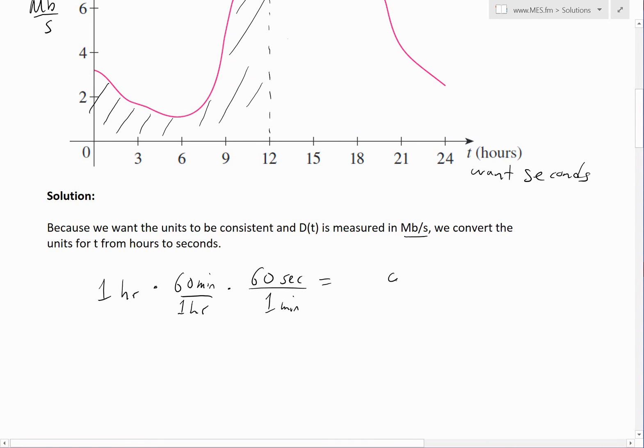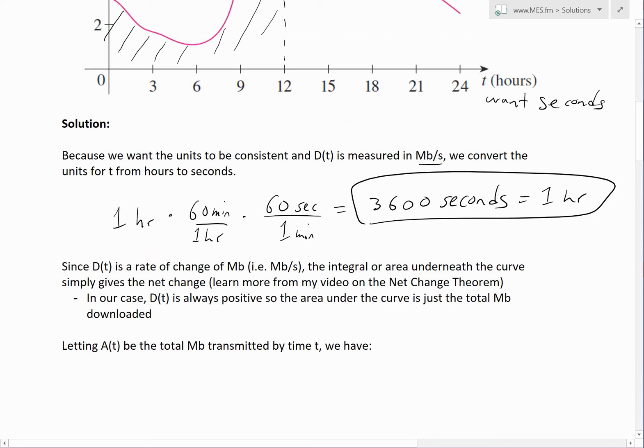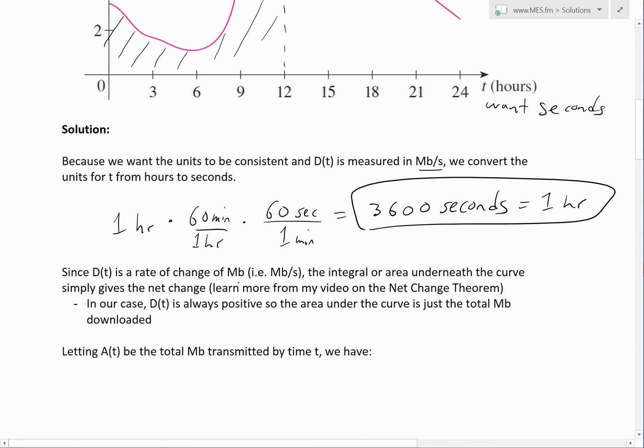So when you multiply all these out, the hours cancel, the minutes cancel, we're just left with here, add two zeros, six times six is 36. So one hour equals 3600 seconds. We could use this conversion when we make a table out of this. Now since DFT is a rate of change of megabits, i.e. megabits per second, the integral or the area underneath the curve simply gives the net change.